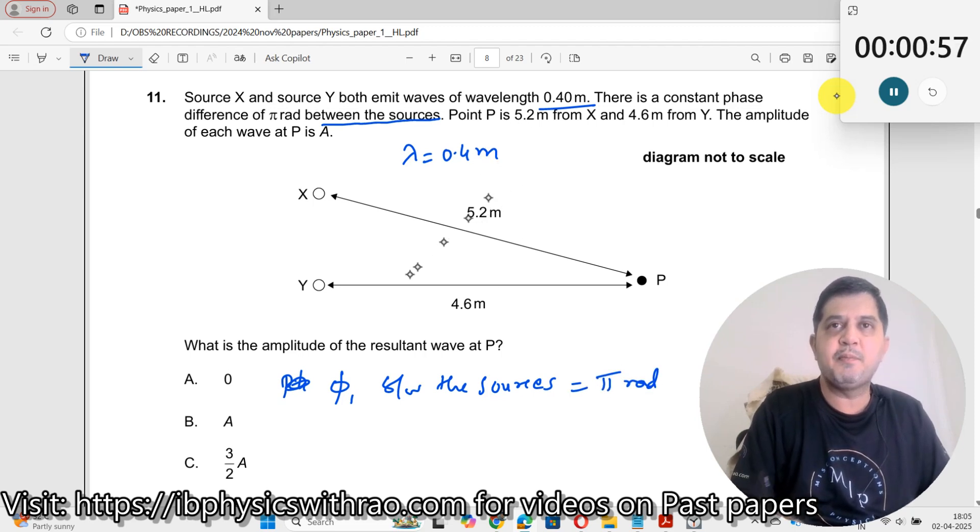Point P is 5.2 meters from X and 4.6 meters from Y. Amplitude of each wave is A. What is the amplitude of the resultant wave at P?